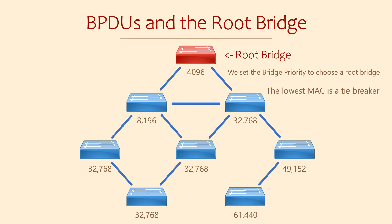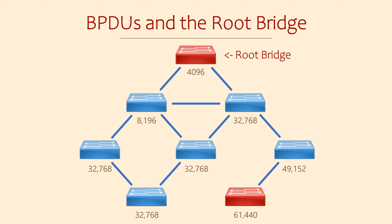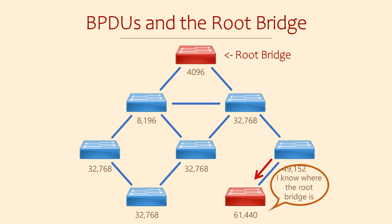When they first come online, every switch thinks that it's the root bridge, so they'll start telling other switches all about it in their BPDUs. These messages are sent every two seconds by default. In the original Spanning Tree protocol, only the root bridge would send BPDUs — other switches would simply forward them on after receiving them, flooding them through the network. If a switch starts sending BPDUs and it has a better, that is lower, Bridge ID, its BPDUs are called superior BPDUs. If a switch that thinks it's the root bridge receives a superior BPDU, it will realise it can't be the root bridge and will stop sending BPDUs of its own, instead forwarding the superior BPDUs out its other links. The main takeaway is that there is a constant flood of BPDUs being sent through the switching network.